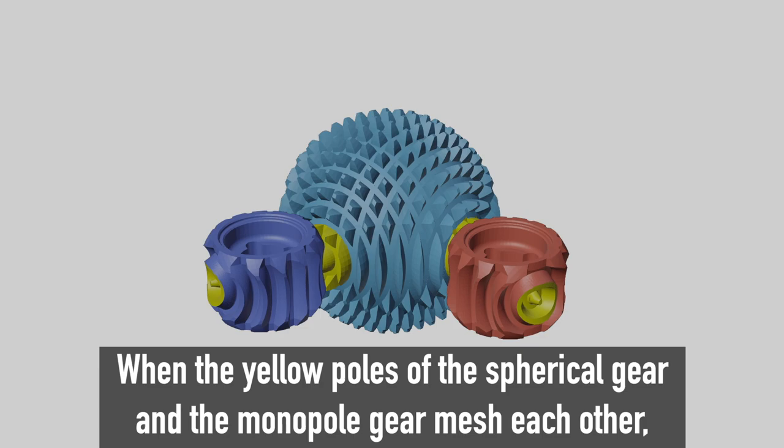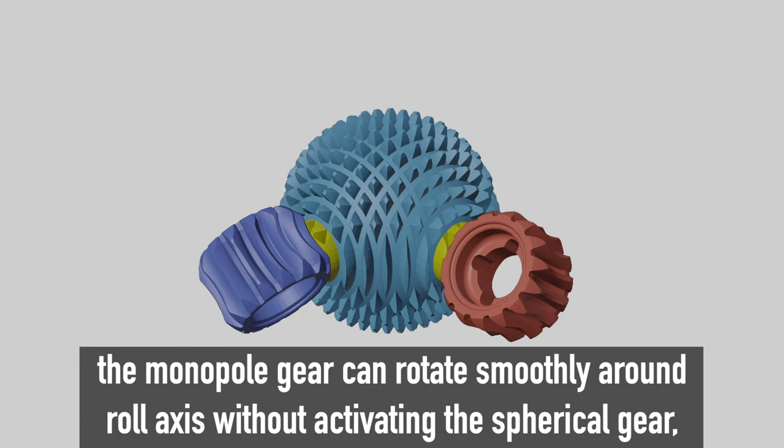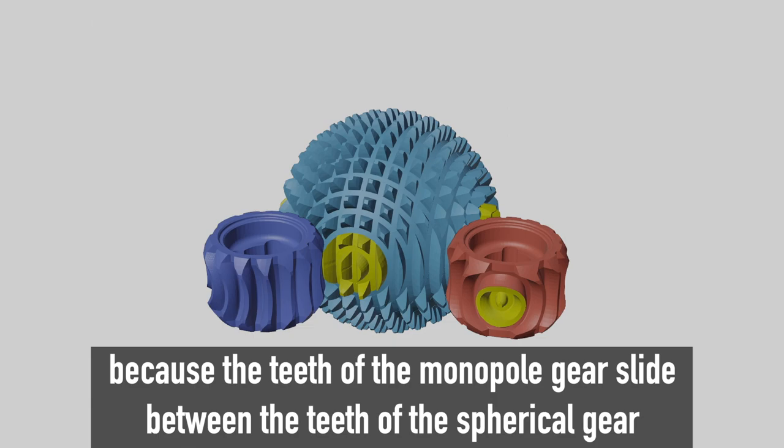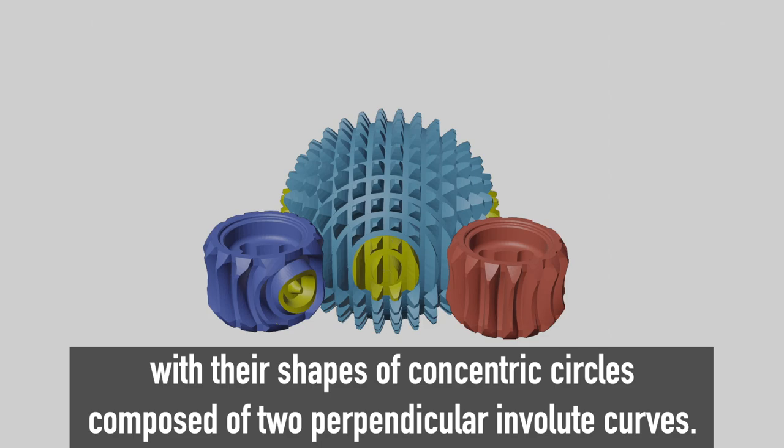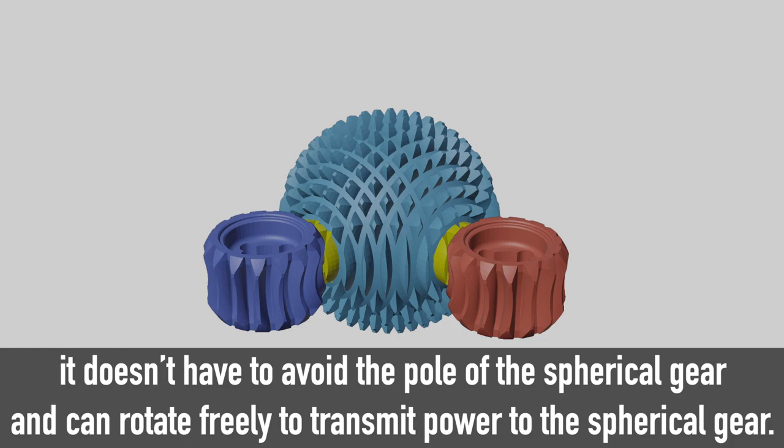When the yellow poles of the spherical gear and the monopole gear mesh each other, the monopole gear can rotate smoothly around roll axis without activating the spherical gear, because the teeth of the monopole gear slide between the teeth of the spherical gear with their shapes of concentric circles composed of two perpendicular involute curves.